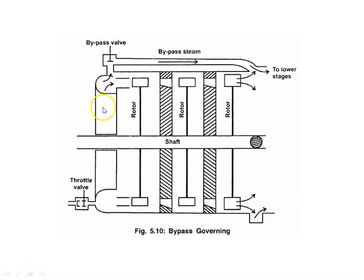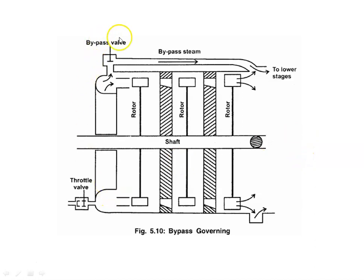The third method is bypass governing. In this arrangement, there is a throttle valve through which steam is admitted, along with a bypass valve at the entrance. The turbine has nozzles and multiple rotor stages. When the load decreases, the bypass valve is opened and a portion of the steam flows through the bypass line, which admits steam to the lower stages or allows it to leave without passing through all the turbine stages, depending on the load conditions. This is bypass governing — based on the load, the bypass valve is opened to divert steam around the rotor.